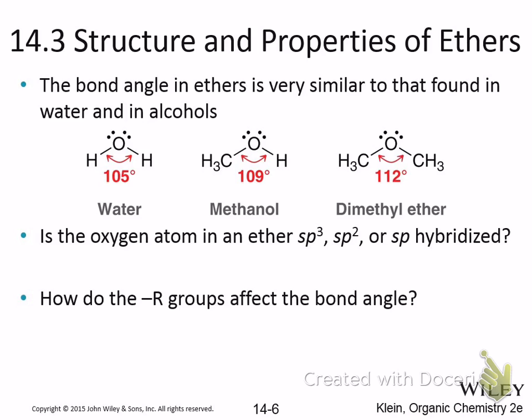Let's talk about properties. Regarding structure: water has a bond angle of 104.5°, methanol is about 109°, and in dimethyl ether — or ethers in general — it's more like 112°. Why is the angle bigger in ethers? The methyl groups are bigger. The size of the groups attached is actually a better predictor of bond angle. So with bigger groups, the bond angle increases.